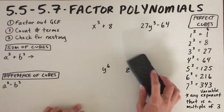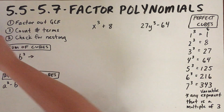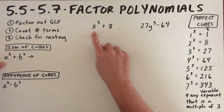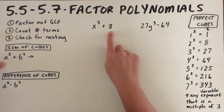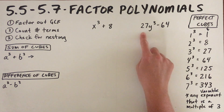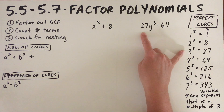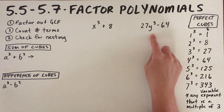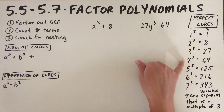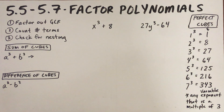If we have a perfect cube, whether we have a sum or a difference, perfect cubes by definition have a cube. So x cubed is a perfect cube, and 8 is a perfect cube — this would be defined as a sum of cubes. This one here would be a difference of cubes because 27 is a perfect cube with root 3, y cubed is a perfect cube, and 64 is a perfect cube with root 4. The only difference between a sum and a difference of cubes is the sign.